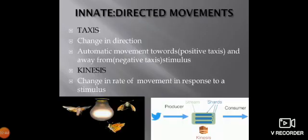Now we discuss innate directed movement. There are two types of innate behavior: taxis and kinesis. Taxis is a random change in direction in response to a particular stimulus, while kinesis is movement in a specific direction. Taxis involves automatic movement towards a positive stimulus and away from a negative stimulus. Kinesis is a change in rate of movement in response to a stimulus.